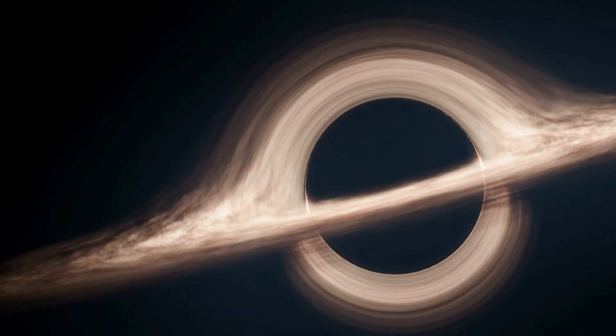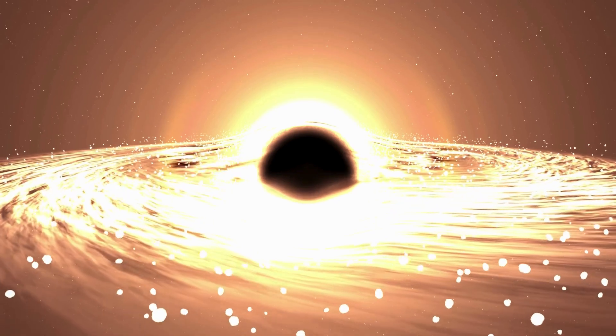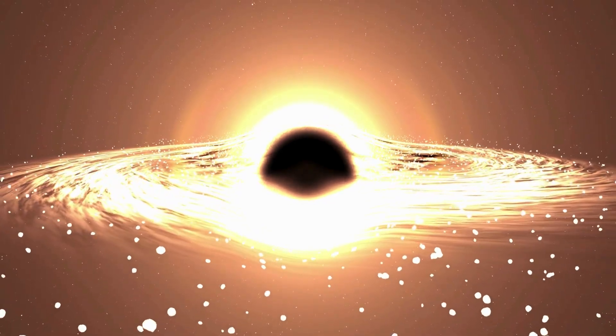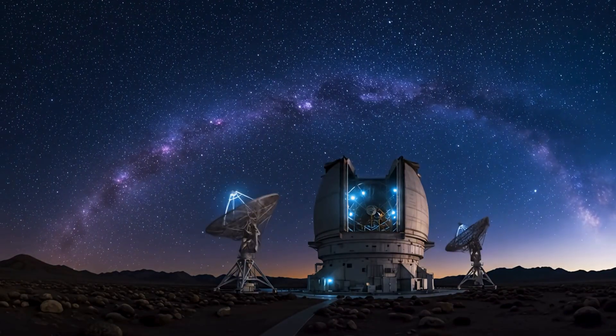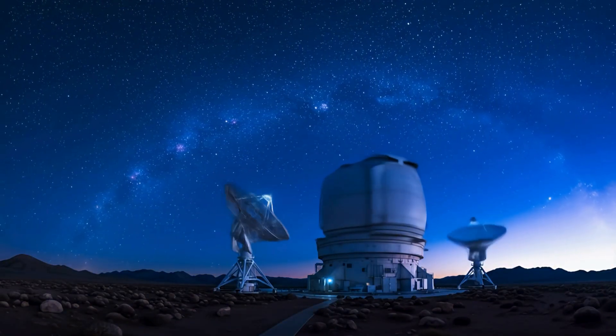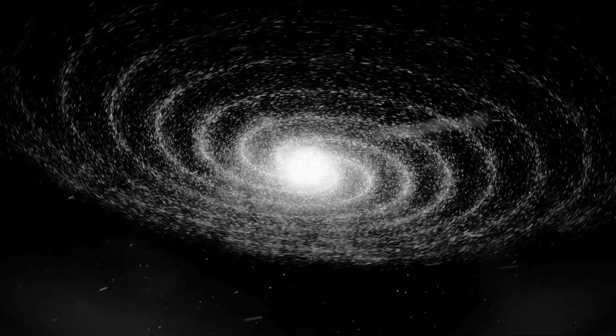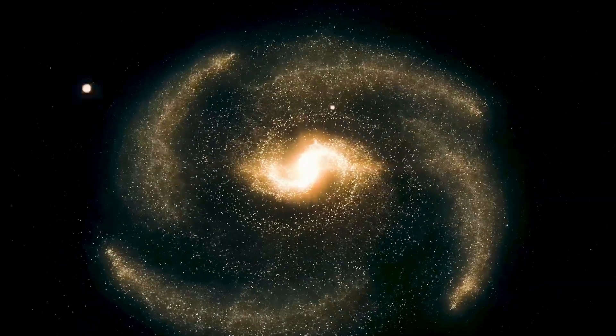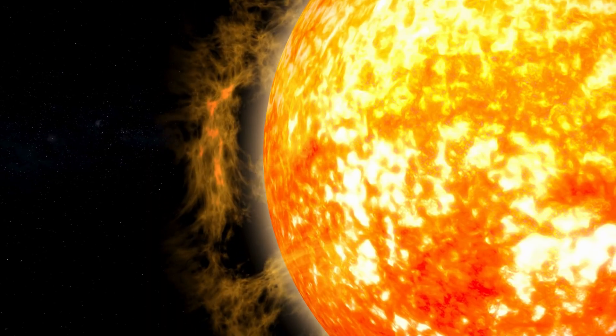Now you might be wondering, if black holes are invisible, how do we even know they're there? Great question. Since they don't emit light, astronomers rely on their effects on nearby matter. When a black hole pulls in gas, dust, or even entire stars, the material spirals inward, forming an accretion disk that heats up to millions of degrees, emitting x-rays and other radiation we can detect.